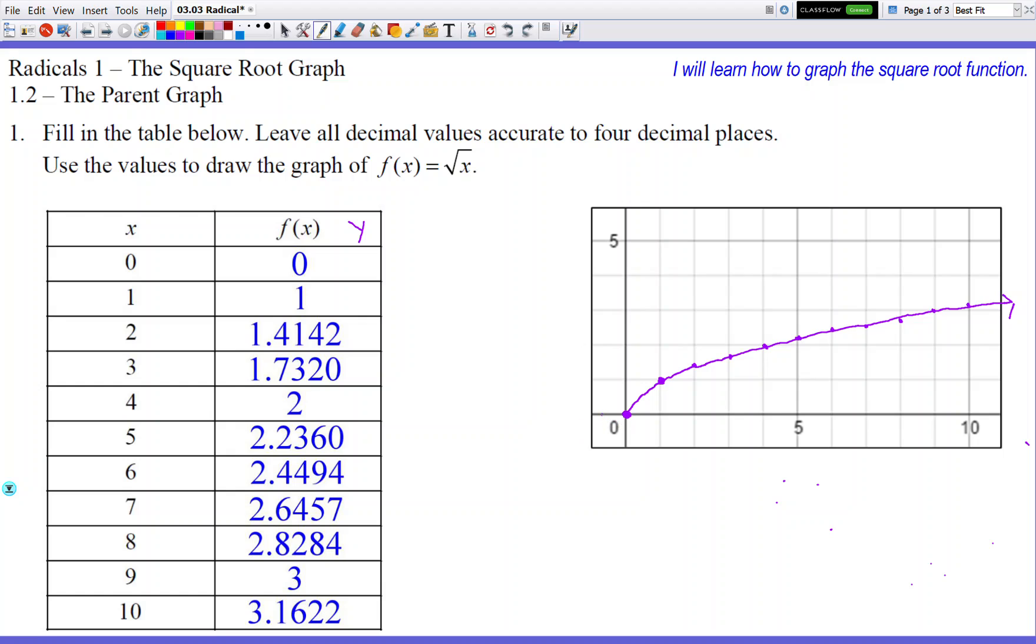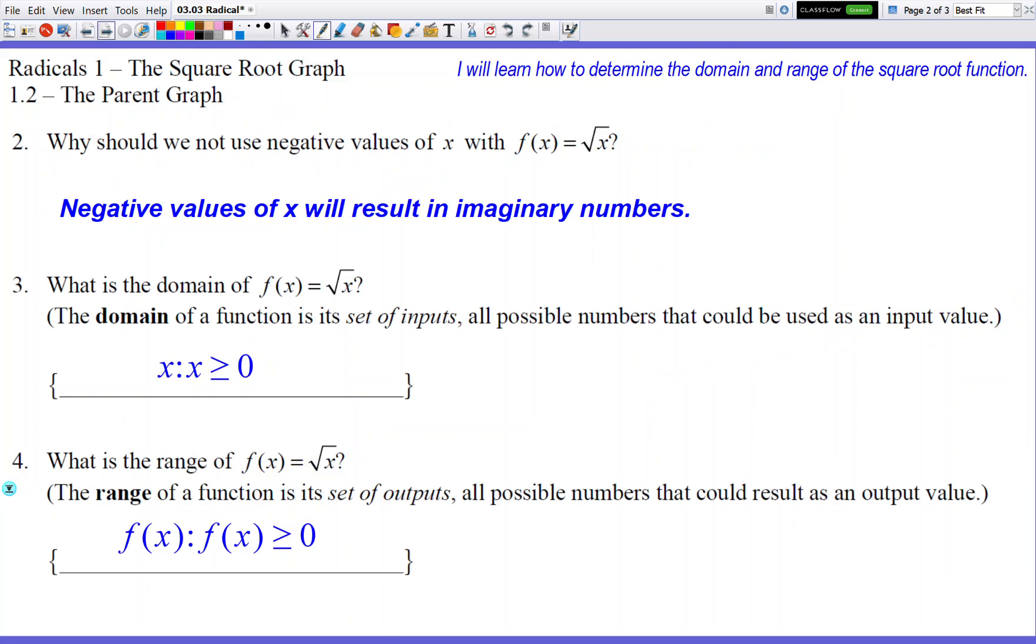Why doesn't it have negative x's? Well, let's see what that answer to that question is, which is actually column number 2. Why should we not use negative values of x with the function f of x equals square root of x? Well, if I do that, if I put a negative number in the square root, I'm going to get an imaginary number, which I cannot graph on an x and y grid. You can't do that. It's not possible.